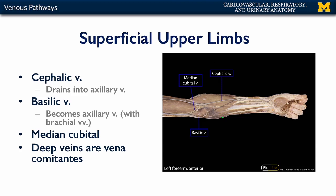The subclavian veins receive their blood from, in part the neck, in part the torso, but largely from the upper limbs. The drainage pattern of the upper limbs is relatively unique in that the major veins are superficial veins, and the deep veins are generally just venae comitantes of upper limb arteries — for instance, venae comitantes of the radial and ulnar arteries, as well as venae comitantes of the brachial arteries.